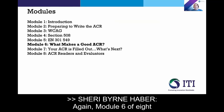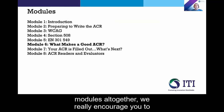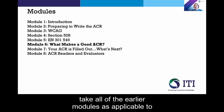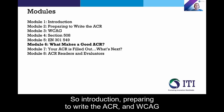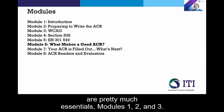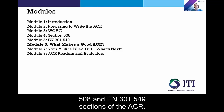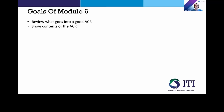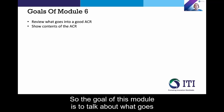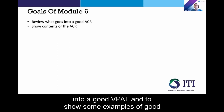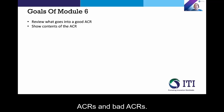Again, this is Module 6 of eight modules altogether. We really encourage you to take all of the earlier modules as applicable to your particular VPAT world. Introduction, preparing to write the ACR, and WCAG are pretty much essential — Modules 1, 2, and 3. Modules 4 and 5 depend on whether you want to complete the 508 and EN 301 549 sections of the ACR. The goal of this module is to talk about what goes into a good VPAT and to show some examples of good ACRs and bad ACRs.